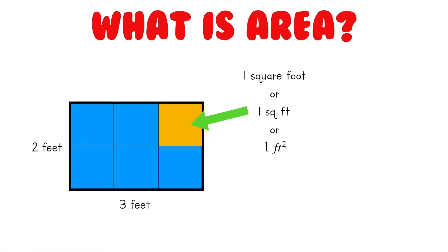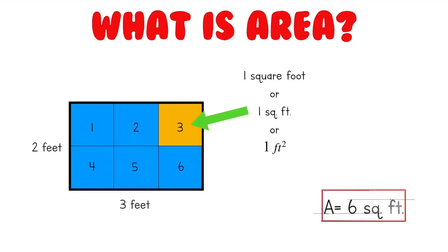Now to find the area of this rectangle, we just need to count how many squares we have. As you can see, we have 1, 2, 3, 4, 5, and 6 total squares. Since each one of these squares has an area of 1 square foot, that means our total area of this rectangle is 6 square feet.